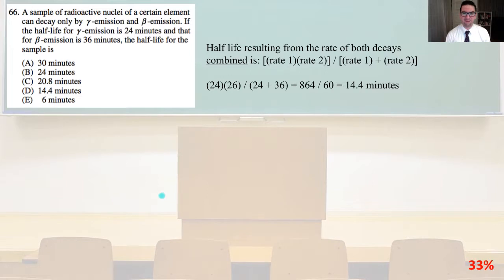And so the half-life resulting from the rate of both decays combined is simply equal to the first rate times the second rate divided by the quantity of the first rate plus the second rate. So let's just plug in our numbers. 24 times 36 divided by (24 + 36) equals, and we're going to have to do some algebra here, 864 divided by 60. And a little more algebra gets us to 14.4 minutes. That is answer D.